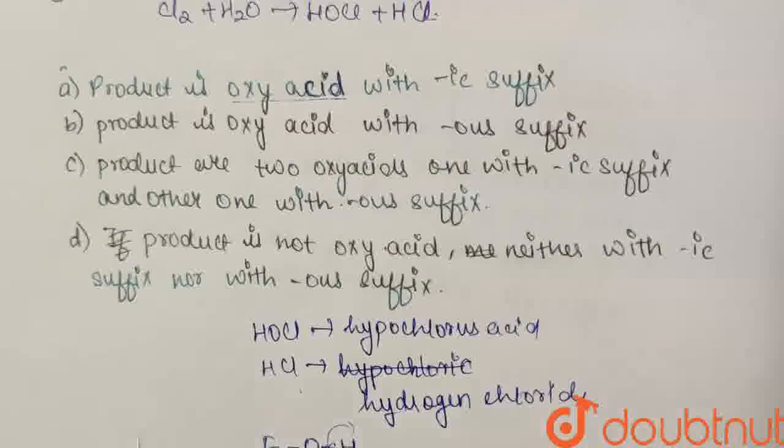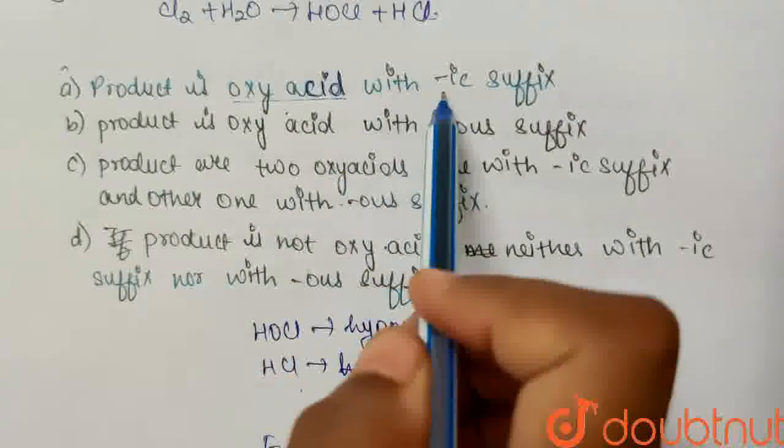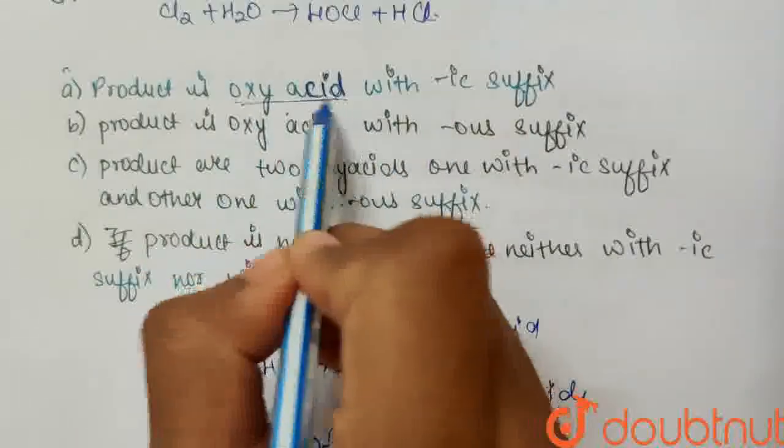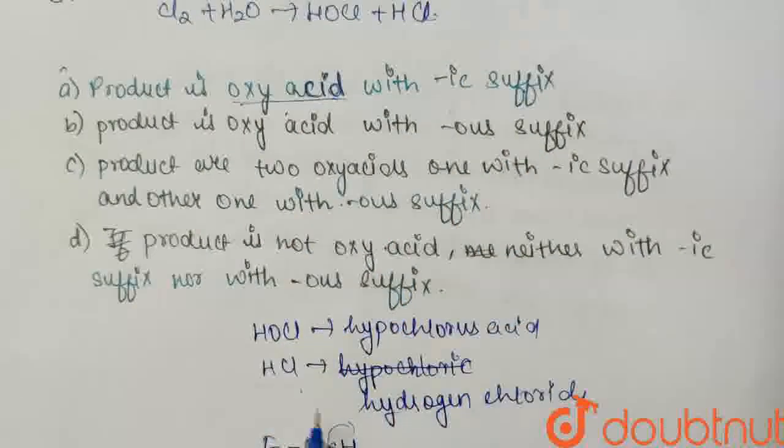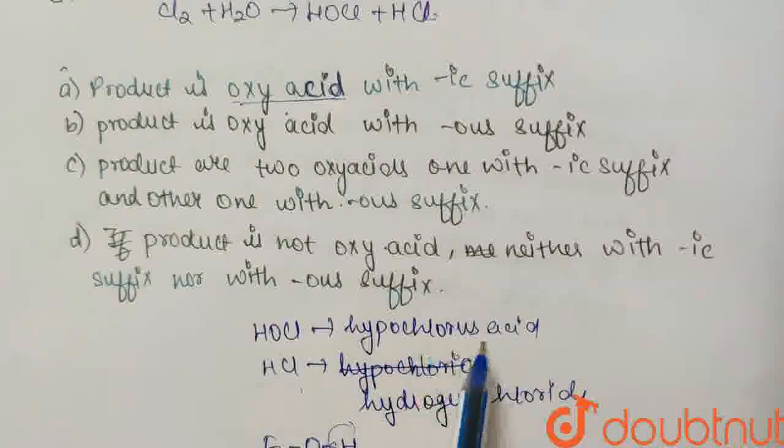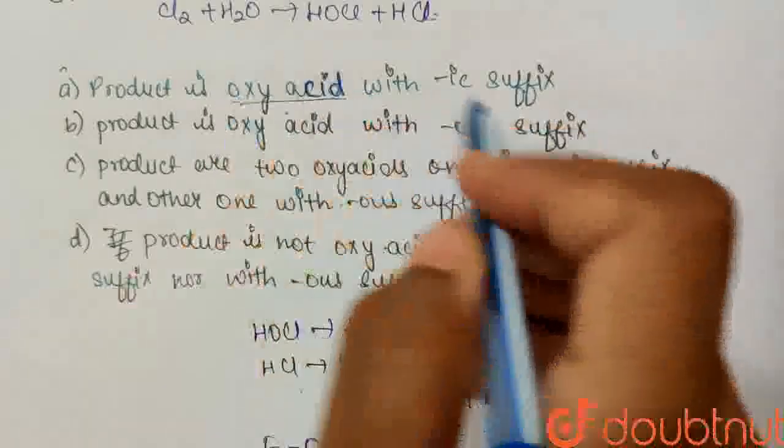First option is product is oxy acid with -ic suffix. Okay, product is oxy acid, right, so this is oxy acid. Right, but it is not -ic suffix because we have seen that its name is hypochlorous acid. So this option is wrong.